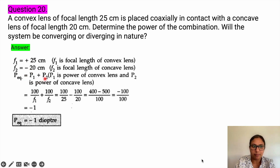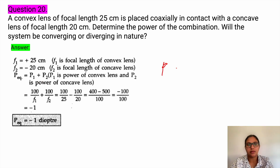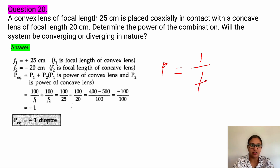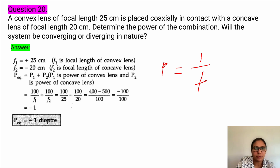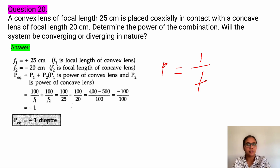So power of the combination will be P1 plus P2. As we know that power is inversely proportional to focal length, so P will be equal to 1 by f1 plus 1 by f2. f1 value is 25, f2 value is minus 20. The values are divided by 100 because diopter is always measured in meters, so we need to convert centimeters to meters. Substituting all the values, you get power equal to minus 1 diopter.